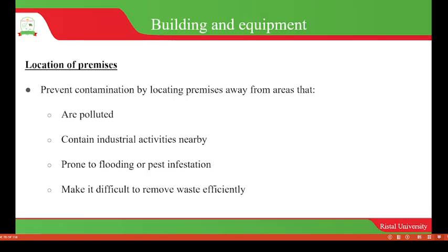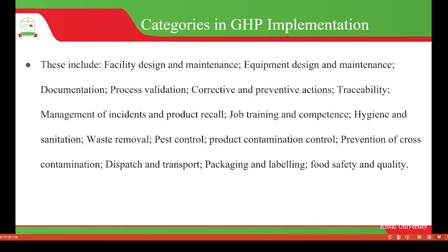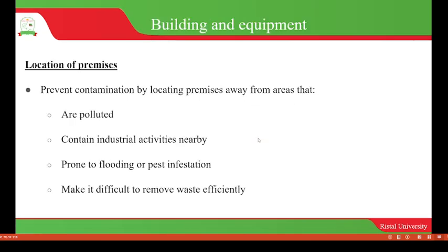We are going to discuss about these categories in the good hygienic practices implementation, starting by looking at the building and equipment. When you look at the location of the building, buildings will be located in a premise or in an area which can allow for prevention of contamination.